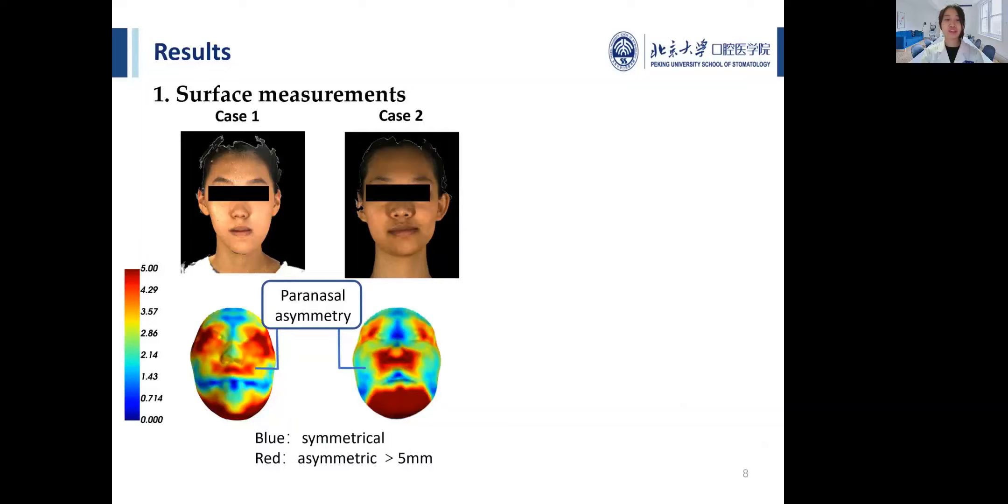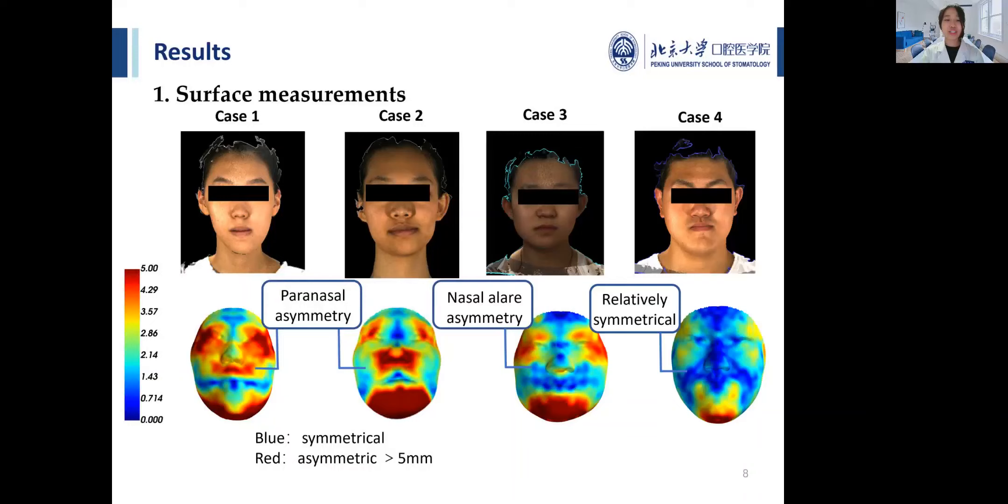For example, case 1 and 2 showed different patterns of paranasal asymmetry. Case 3 shows nasal alar asymmetry. Case 4 had relatively symmetrical nose.